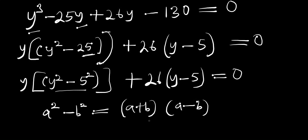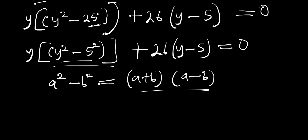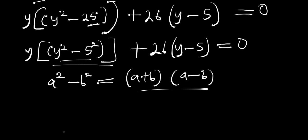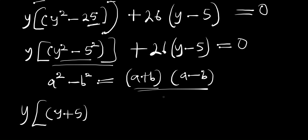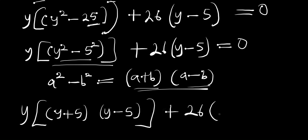Applying the difference of squares identity, we have y times (y + 5)(y - 5) plus 26(y - 5) = 0.